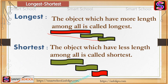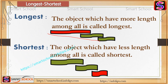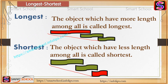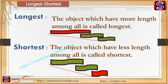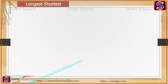If there are only two objects, we say longer, but if there are more than two, we say longest. Similarly, the object which has the least length among all is called shortest. Whenever we compare more than two objects, we can say longest or shortest.